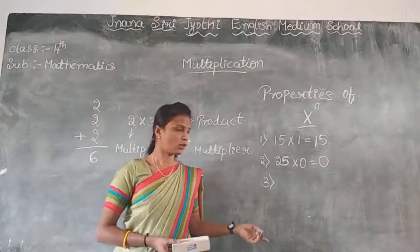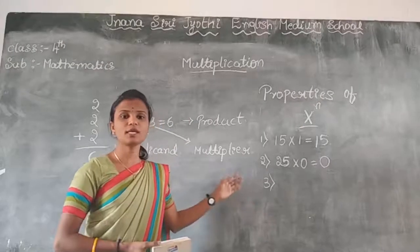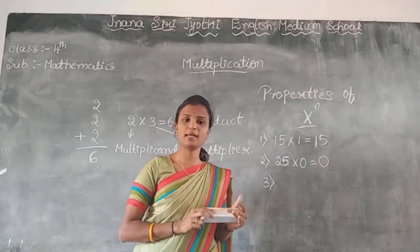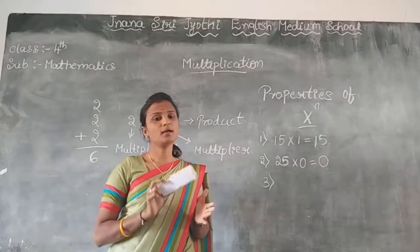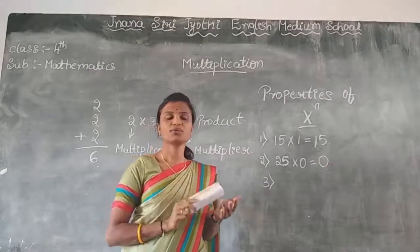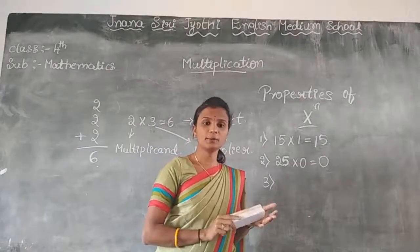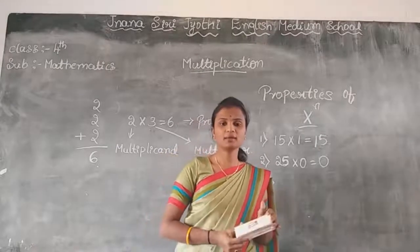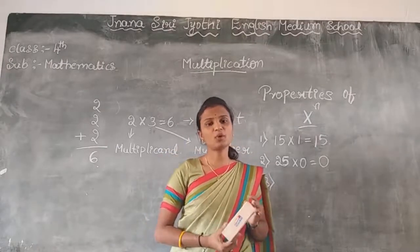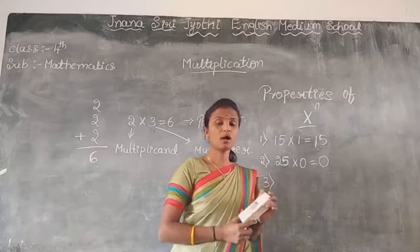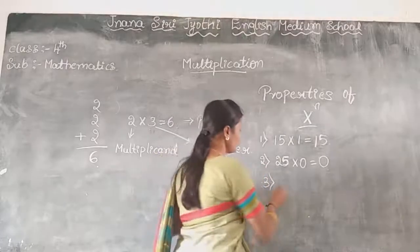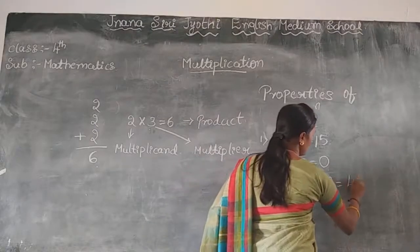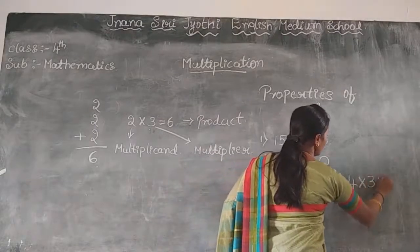The third property: if 3 or more numbers are multiplied and grouped in any order or coupling, then their final product remains the same. For example, 4 into 3 into 8. Children, observe this carefully — no matter how you group the numbers, the final product stays the same.